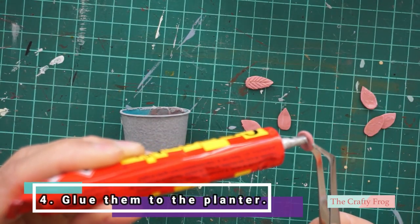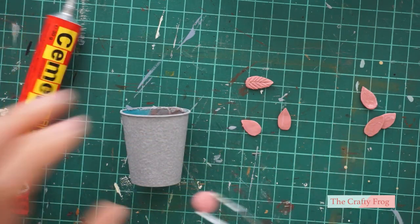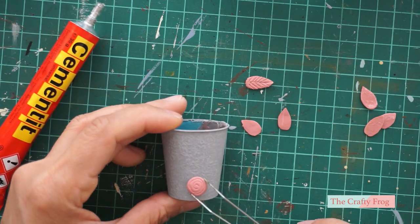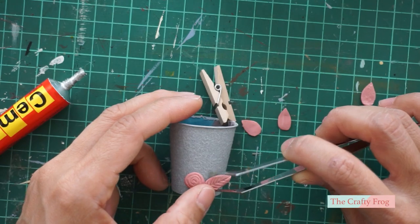After baking and cooling the clay, I proceeded gluing the leaves on the shot glass. There is no right or wrong in placing the leaves, so do whatever pleases you, as long as they are sticking.